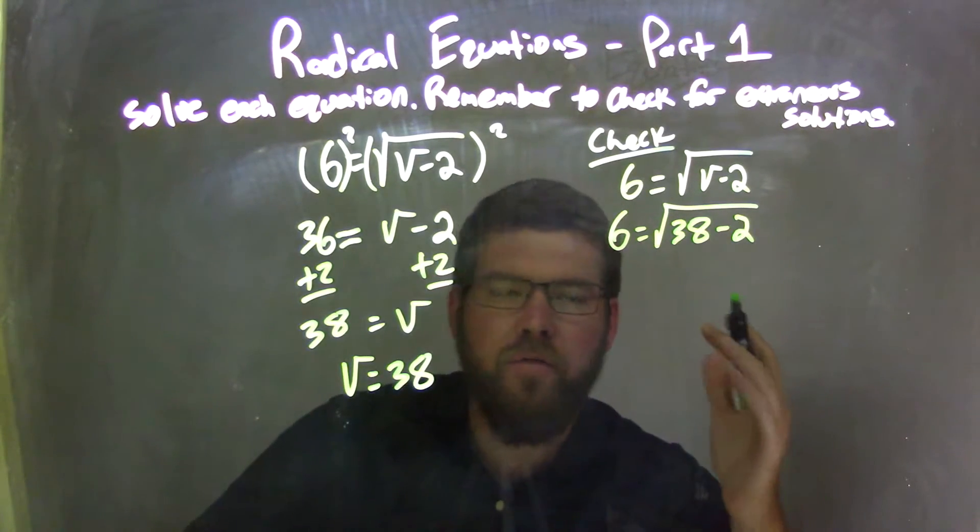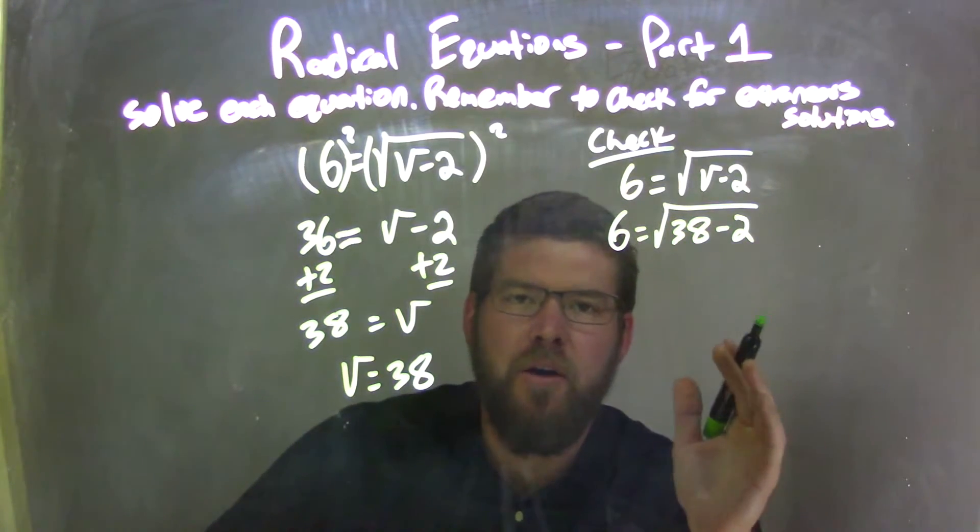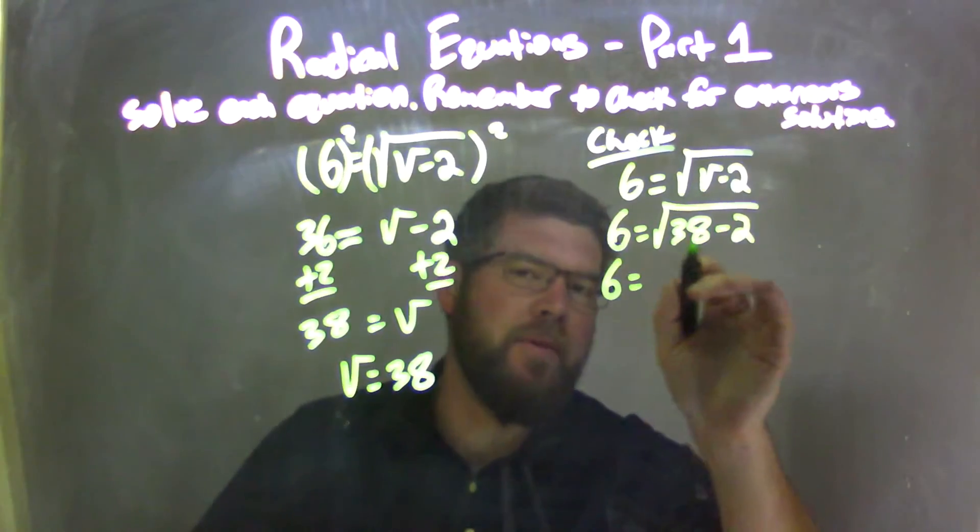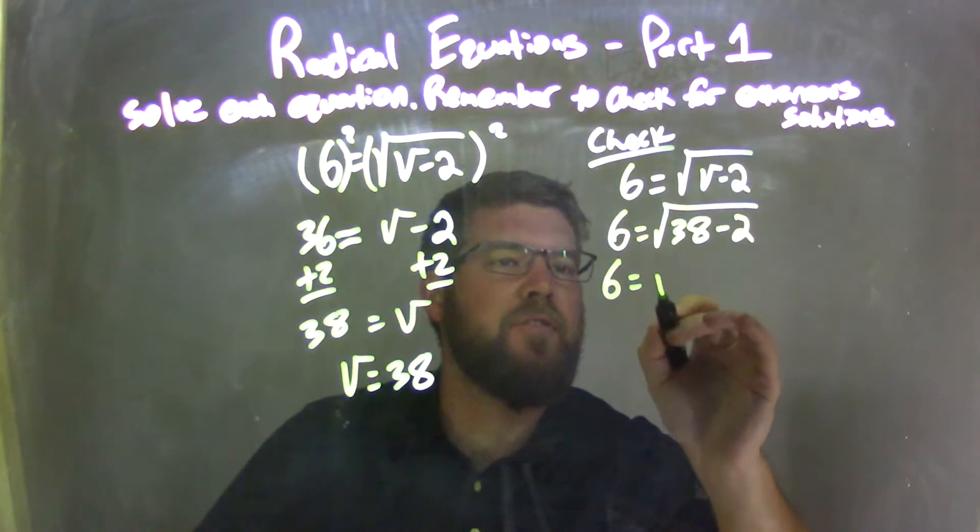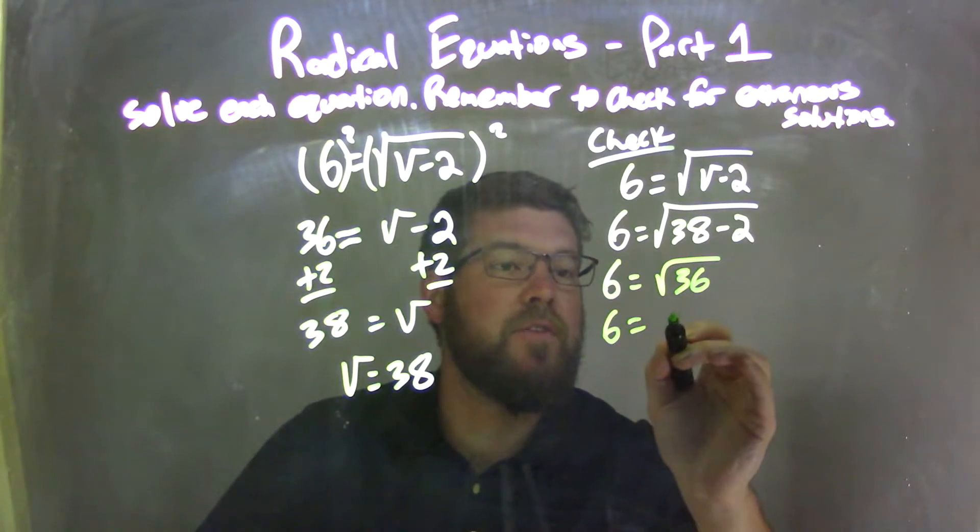So now I'm going to solve this, or simplify really, and keep everything on each side of the equal sign. So 6 stays by itself here and I'm going to simplify on this side and hopefully we get 6. 38 minus 2 is 36. Square root of 36 is just 6.